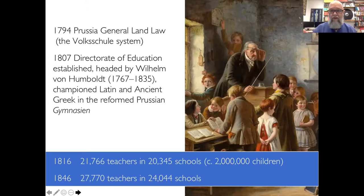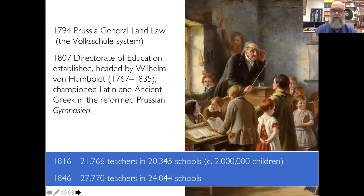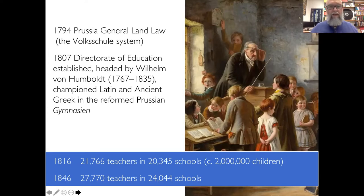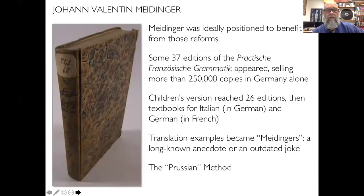When you think about those numbers — 20,000 schools, 21,000 teachers — what we're talking about mainly is very small, one-teacher schools. These are just little parish schools with one teacher teaching quite a lot of students. If there are 2 million students between 20,000 schools, we're talking about between 90 and 95 children per teacher on average. 30 years later the numbers are still the same. These individual single teachers had to teach their students a whole range of things, including Latin and Greek. What if your Latin and Greek isn't that good? That's where Meidinger came into his own — ideally positioned to benefit these reforms. His books became the standard apparatus for teaching language in these schools.